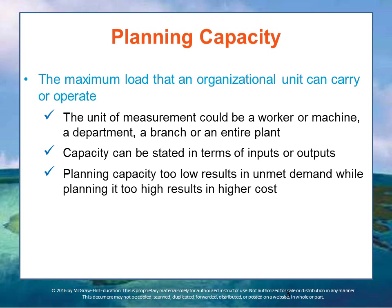Another important activity to plan is capacity. Planning of the operational processes of the organization has two areas: facilities planning, which covers where to put things, and capacity planning. The term capacity basically refers to the maximum load that an organizational unit can carry or operate — how much throughput one can have. The unit of measurement may be a worker, a machine, a department, a branch, or even an entire plant. Efficiently planning the organization's capacity allows you to determine how much of a product you can sell, how much input you need to purchase, and how to manage your inventory turnover processes.